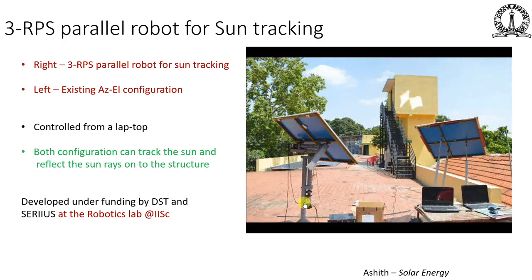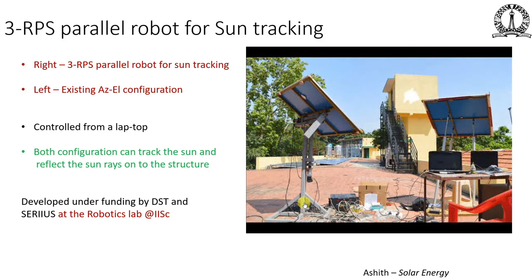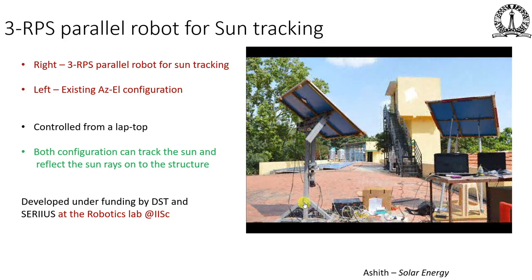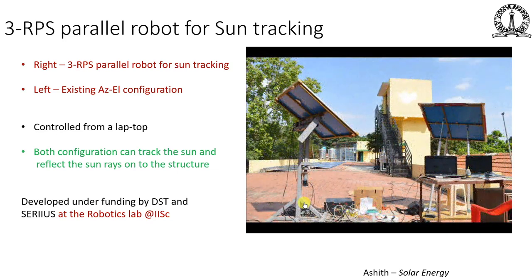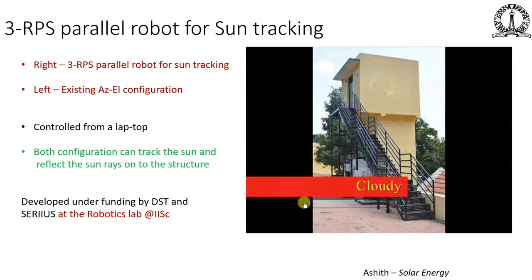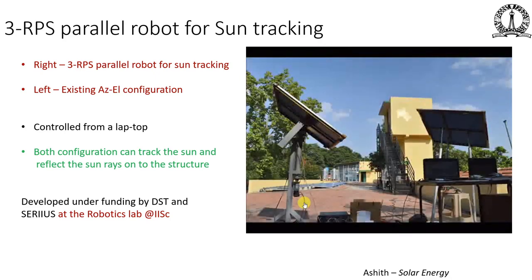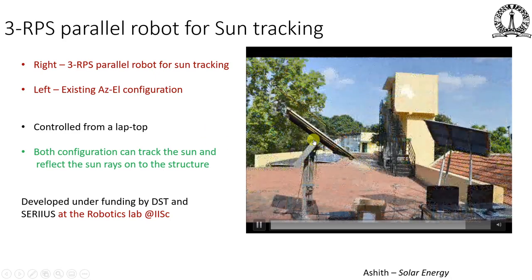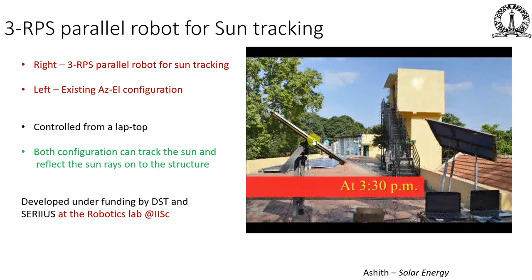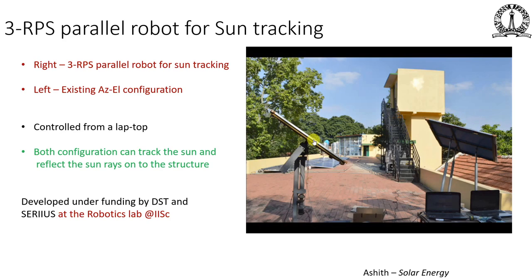The sun-tracking experiment was conducted on the roof of an IISc building where interdisciplinary solar energy research was ongoing. Some errors are visible — ideally the reflected beam should stay exactly focused at the same point — and during a cloudy period there is no reflection. By late afternoon the mirrors have rotated quite significantly. Solar panels and the two tracking mirrors are visible on the rooftop.